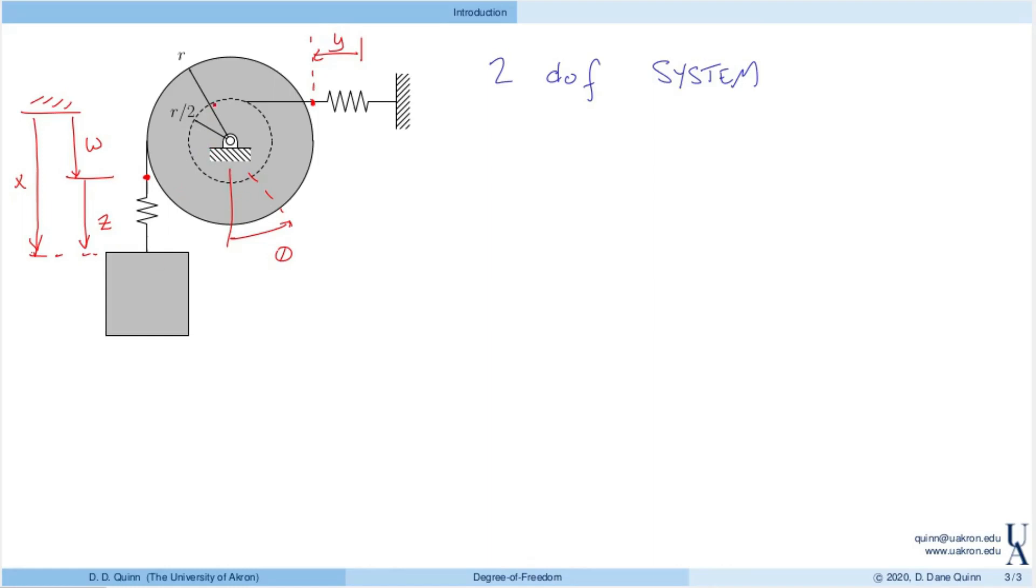Now only two of these are independent because a lot of these are related one to another. In particular, if I look at y and theta, we can show that y is equal to r over 2 times theta. Also, w and theta are related, so w here is equal to r times theta. So if you know any one of these three, y, theta, or w, then you can find the other two. That's not an independent set. So we can only choose one of these three.